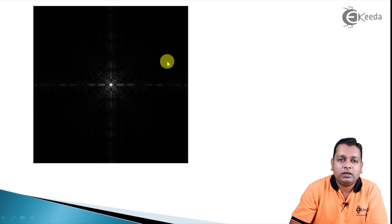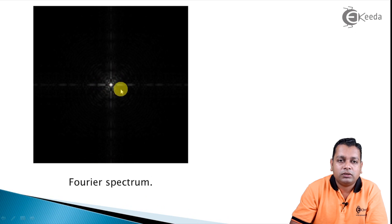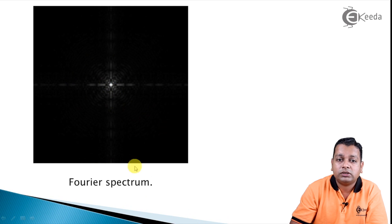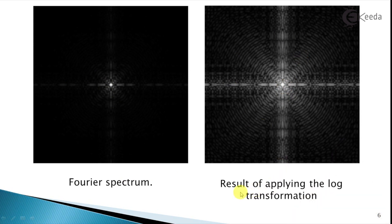The first example image is a Fourier spectrum where the entire portion appears black except for a white spot — the information is confined to that region only. When we apply the logarithmic transformation to this Fourier spectrum, the output shown in the second image reveals enhanced detail. The whiteness and visible detail appear significantly enhanced compared to the original.